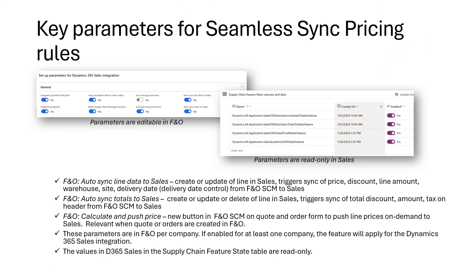To finalize configuration of dual-write seamless sync, there are additional parameters to review in Finance and Operations. The F&O auto-sync line data to Sales is needed so that for create or update of lines of type quote or sales order in Dynamics 365 Sales, synchronization of prices, discounts, line amounts, and more from Finance and Operations Supply Chain Management is triggered. The F&O auto-sync totals to Sales is needed for create, update, or delete of lines of type sales quote or sales order from Sales to trigger synchronization of total discounts, amounts, and tax from Finance and Operations SCM. The calculate and push prices parameter is relevant when quotes or orders are created and managed in Finance and Operations and we want prices, discounts, totals, and so on synced to Dynamics 365 Sales.